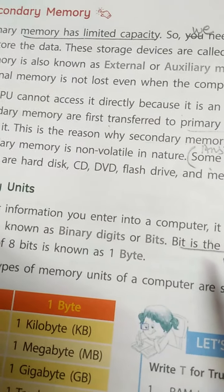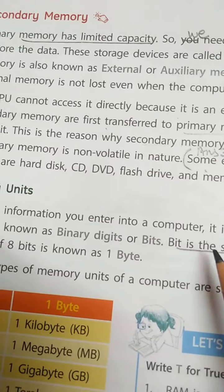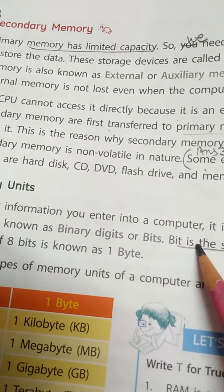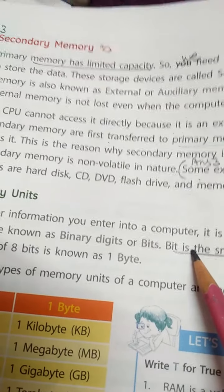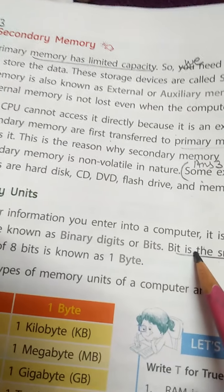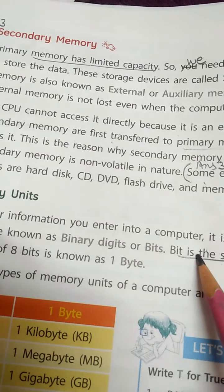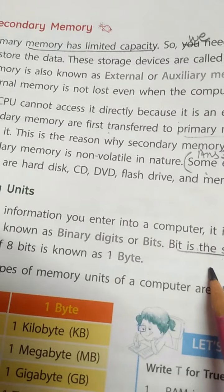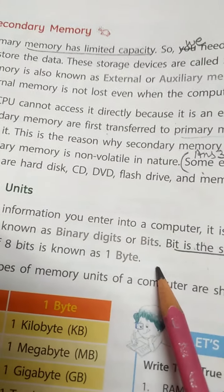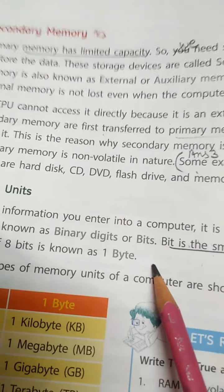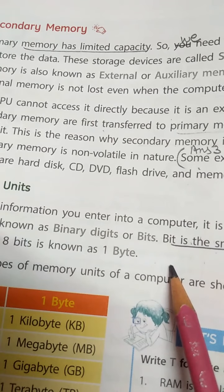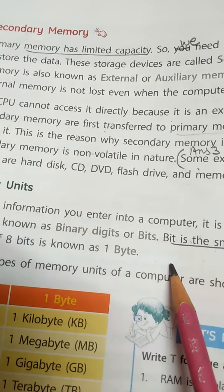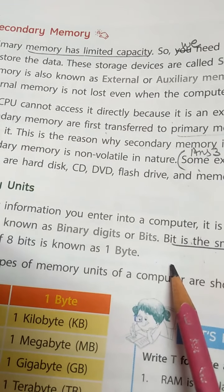But students, the CPU cannot access these devices directly. First, the data goes to primary memory, and then the CPU accesses that data. That's why secondary memory is very, very slower than primary memory.